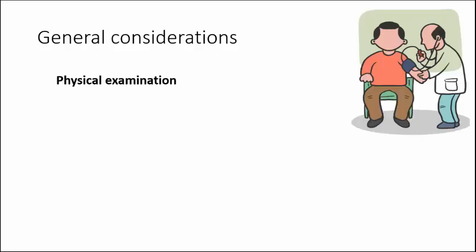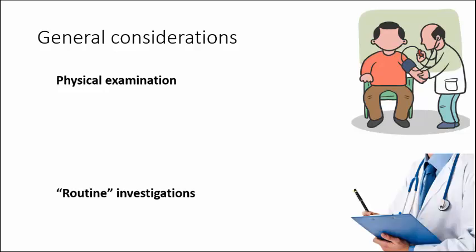Before we talk about specific methods for the diagnosis of cancer, let's look at some general considerations. As soon as a patient comes with vague symptoms, the physician examines the patient thoroughly. There will be a thorough physical examination to find certain clues, and then the clinician advises routine blood investigations, which may tell you whether the patient has anemia or polycythemia secondary to an underlying malignancy. If it is a blood-related malignancy, you can detect leukemia by examination of the peripheral blood smear.